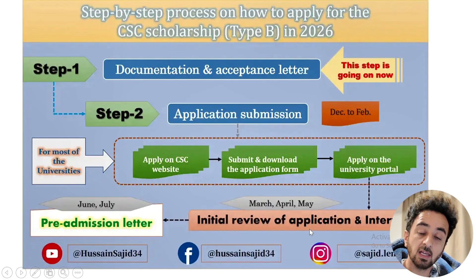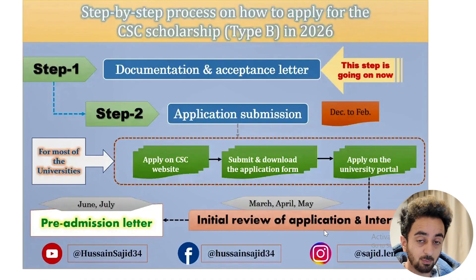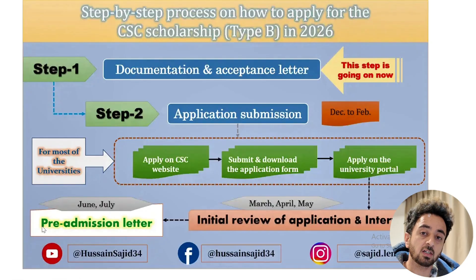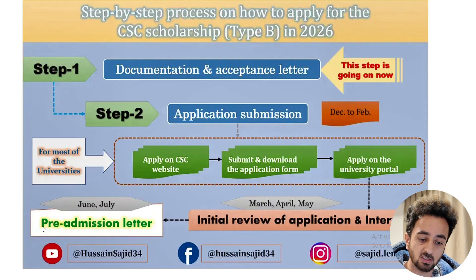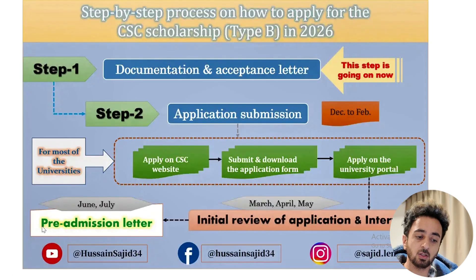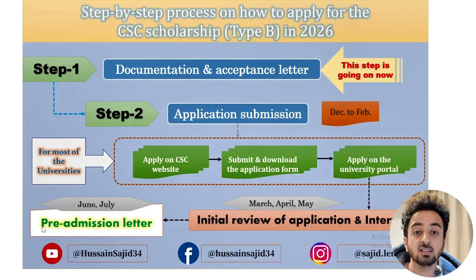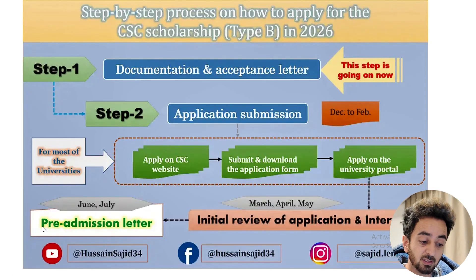In March and April there will be an initial review of your application. Most universities will conduct an interview for masters and PhD students. If you pass the interview, the university will provide a pre-admission letter. For undergraduate students, if your documents pass the initial review, you'll also receive a pre-admission letter. Then you go back to the CSC portal — which will reopen — upload the pre-admission letter, and submit again. After one or two months, results will come out.